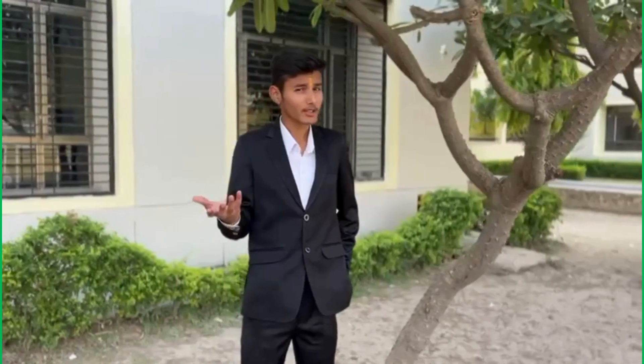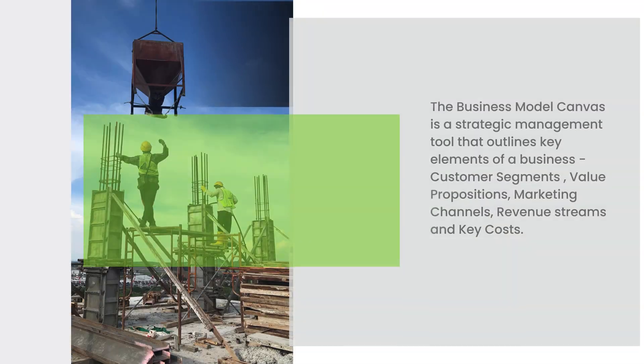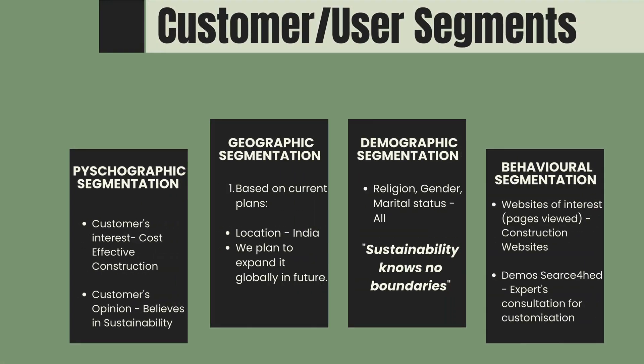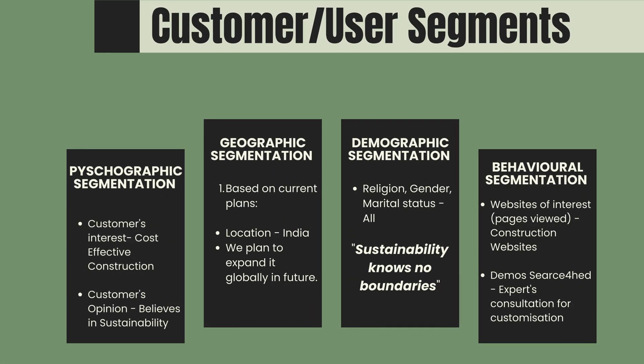So, how is it even profitable? Here is the business model canvas. The first element is customer and user segments. We have divided our customers based on psychological, geographical, demographical, and behavioral interests.